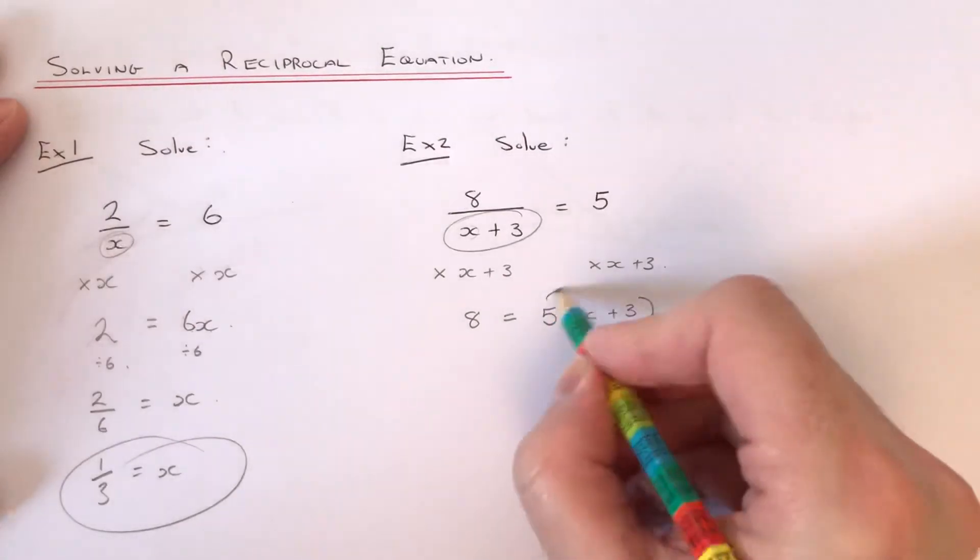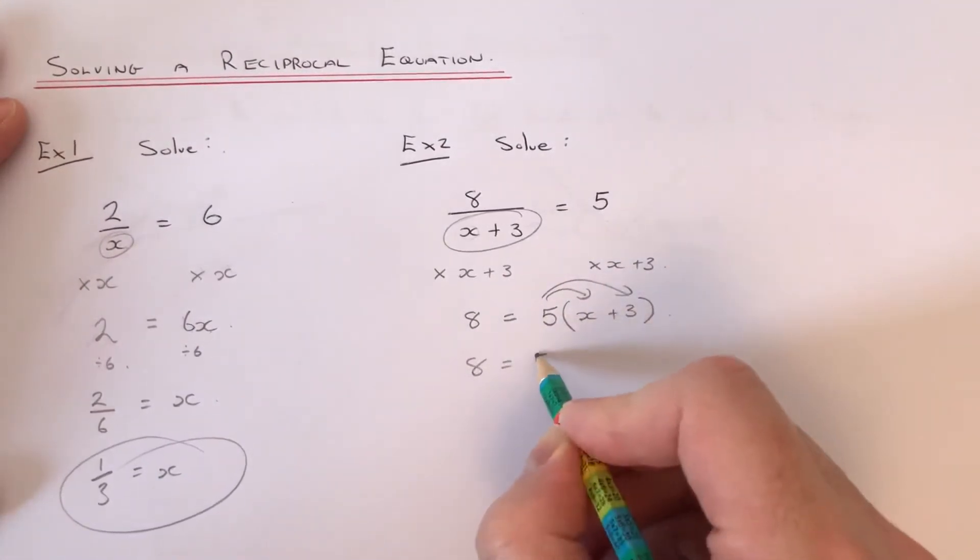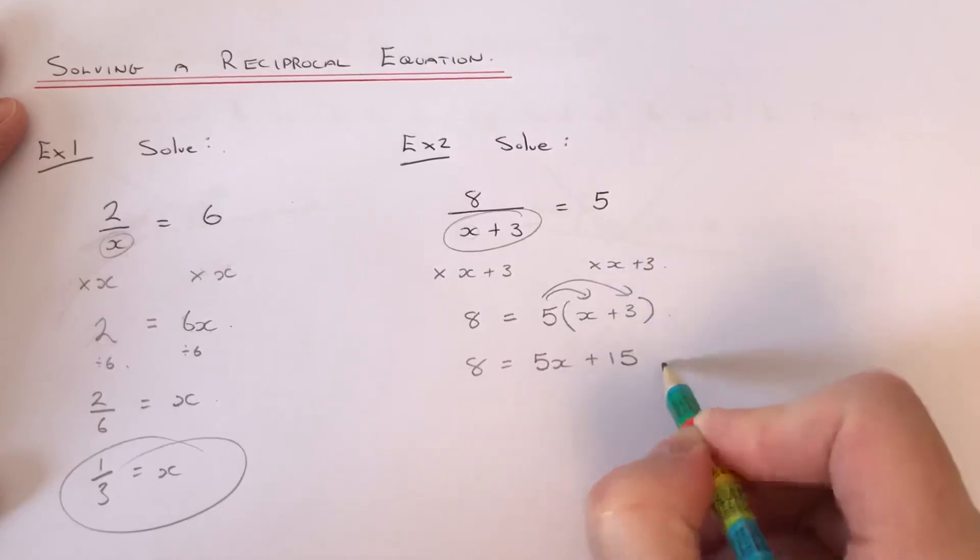So what we can do next is multiply out the brackets. So that will give us 5x plus 15.